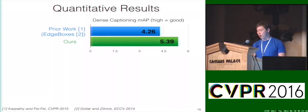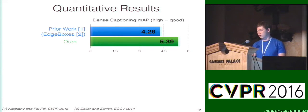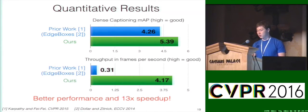To quantitatively evaluate our model, we define a dense captioning metric which evaluates both our bounding boxes and our captions. Compared to prior work that used independent processing on top of Edgebox's region proposals, we get a pretty healthy boost. In addition to being more accurate, our method is also more than 13 times faster than the prior method. On a Titan X GPU, we can process several high-resolution frames per second.